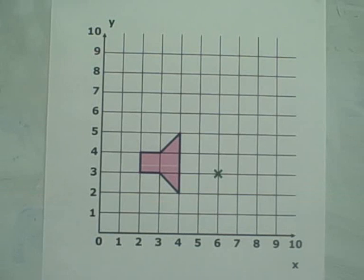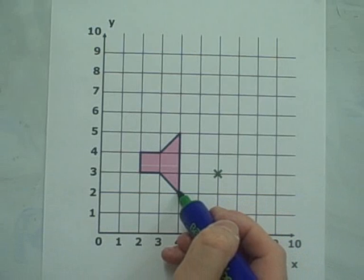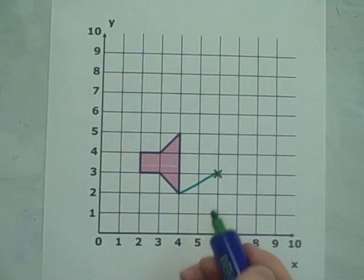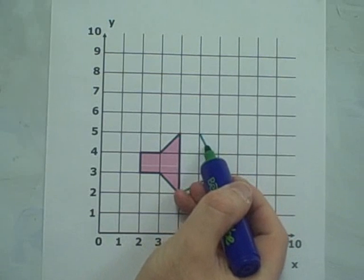To get from the point 4,2 to the centre of rotation, we move right 2 and up 1. Rotating 90 degrees, this becomes left 1 and up 2.